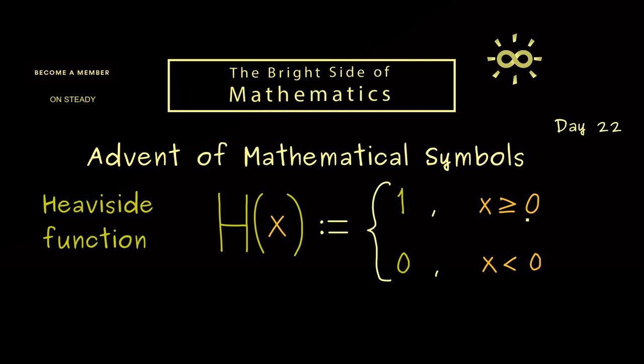However, there are also other conventions. Sometimes x equals 0 is set to one-half. Then the value lies exactly in the middle here. However, actually for a lot of applications it does not matter at all what we do with the point x equals 0.